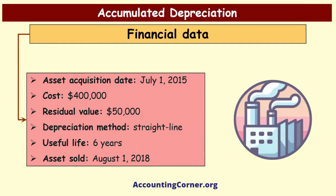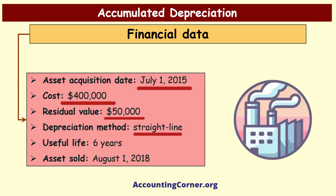Here is the financial data for the asset. The asset was acquired on the 1st of July 2015. The purchase cost of the asset was four hundred thousand dollars. The estimated residual value, or salvage value, was fifty thousand dollars. The company used the straight-line method for depreciation. The useful life of the asset was set at six years. The asset was sold on the 1st of August 2018.